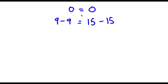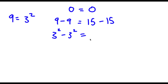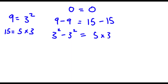For my left hand side, 0 is the same thing as 9 minus 9, because anything minus itself is 0. And for my right hand side, I'm going to rewrite 0 as 15 minus 15, which is also equal to 0. Now, 9 is equal to 3 squared, so I replace it to get 3 squared minus 3 squared. And 15 is equal to 5 times 3.